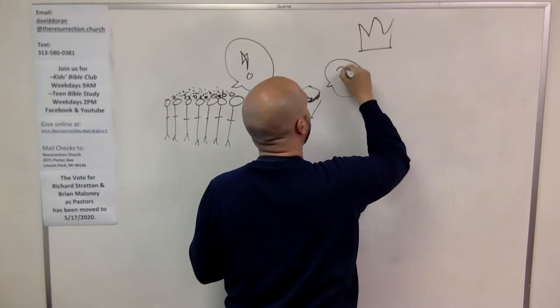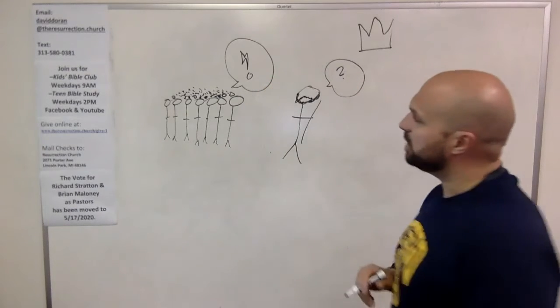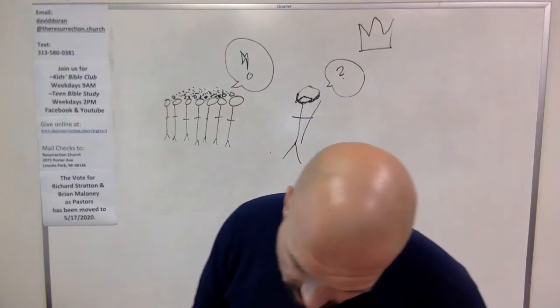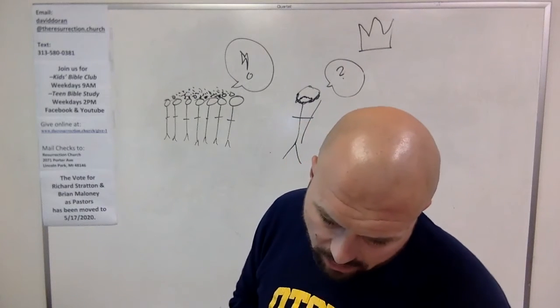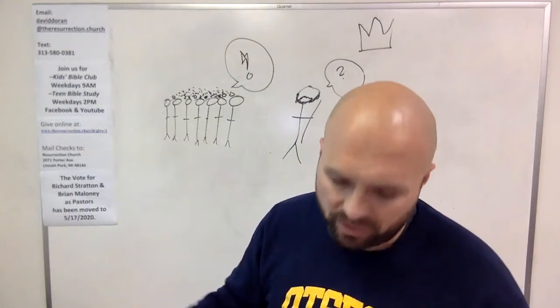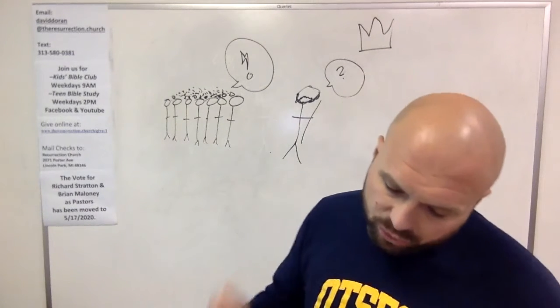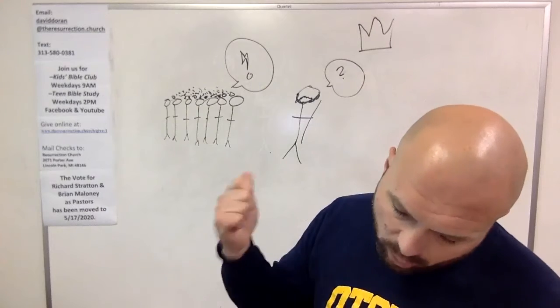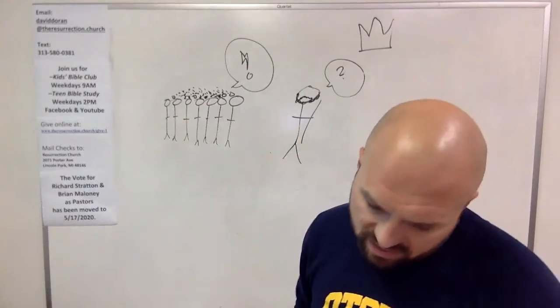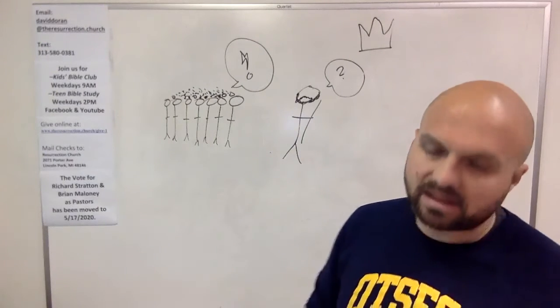And Moses says to the Lord, Lord, help me out here. These people, they are a pain, right? They're about to kill me. Moses is saying, what do I do, Lord? And the Lord says, well, here's what I'm going to do. Look what it says. Go out in front of the people, take some of the elders of Israel and take in your hand the staff with which you struck the Nile River and go. And I will stand there before you at the rock at Horeb. Strike the rock and water will come out of it for the people to drink. So Moses did this in the sight of the elders. And he called the place Massa and Meribah.